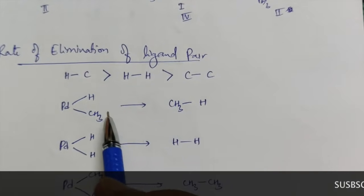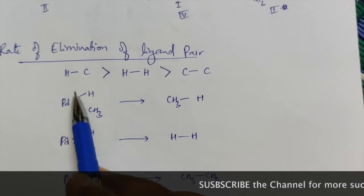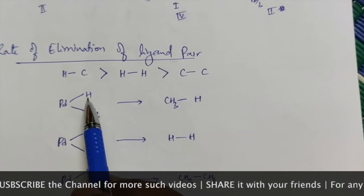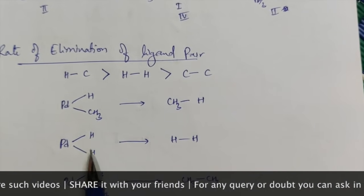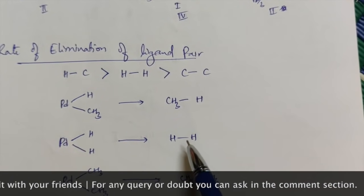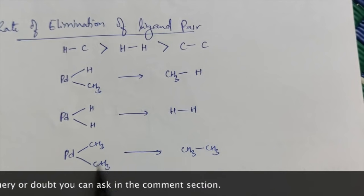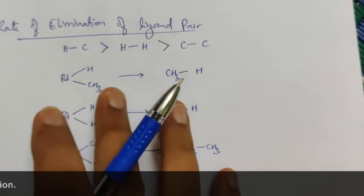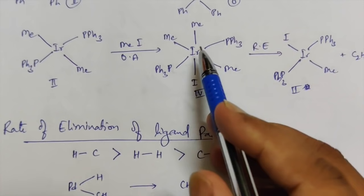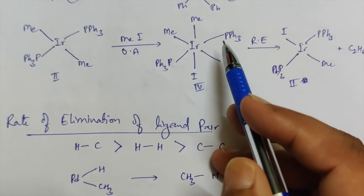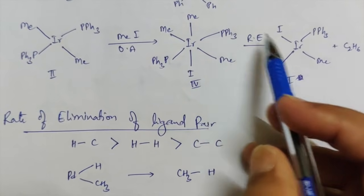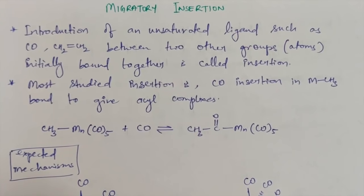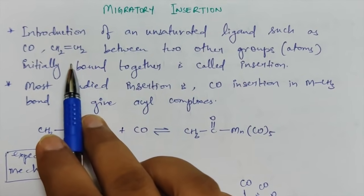What is the rate of elimination of ligands? The rate of elimination is: C-H (one carbon part and one hydrogen part cis to each other) leaves with the greatest rate, then H-H meaning two hydrogens forming H2 leaves with a lesser rate, and the least rate is for two methyl groups leaving together as a hydrocarbon. So if this complex has a hydrogen somewhere, the formation of methane would be more likely than the formation of ethane.